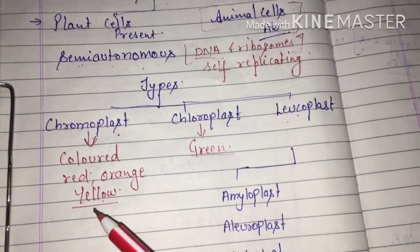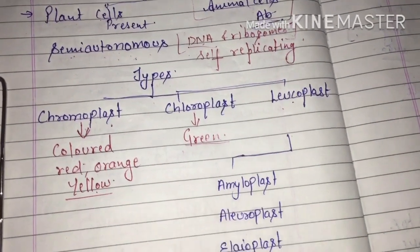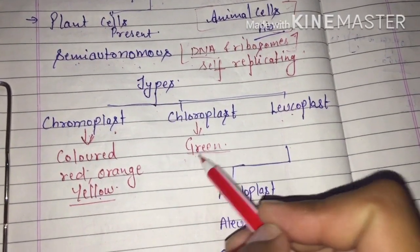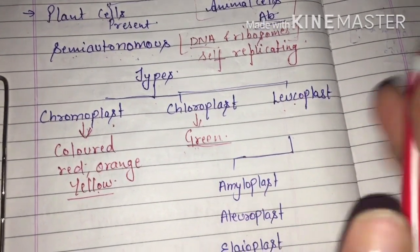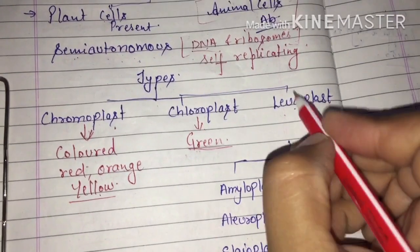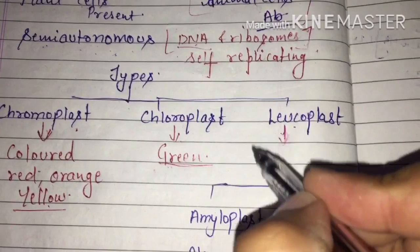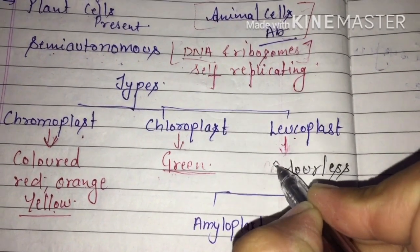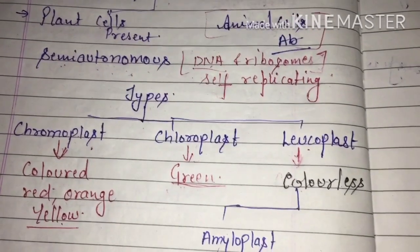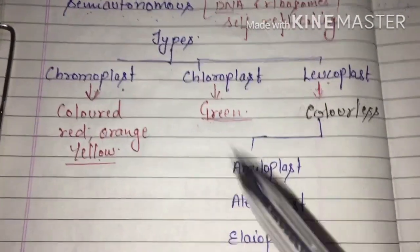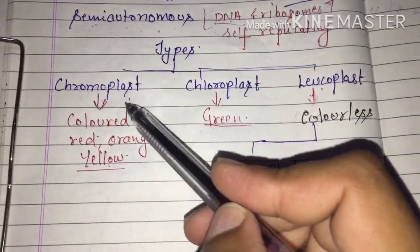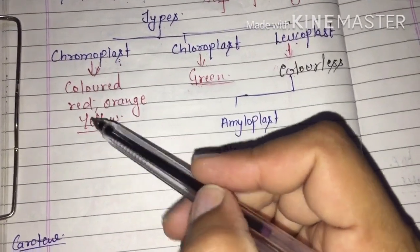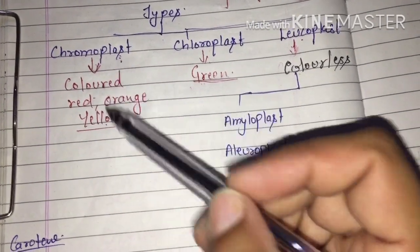Chromoplasts provide color to the plant, to different parts of the plant. Chloroplast also provides color to the plant, mainly green color. The third type of plastid, leucoplast, these are colorless plastids — they do not provide any particular color. Now, chromoplast provides red, orange, yellow, and different shades of these colors to the plant.